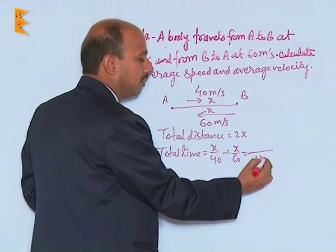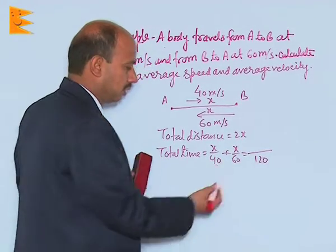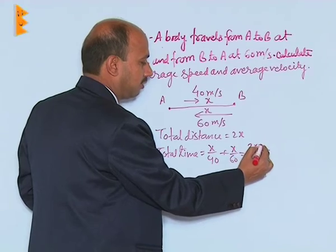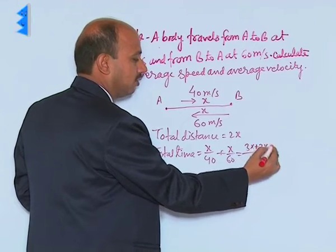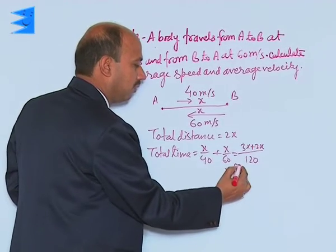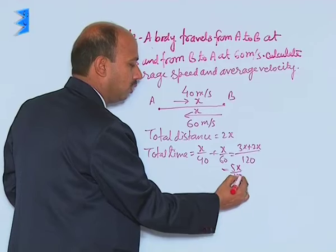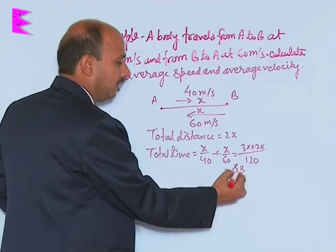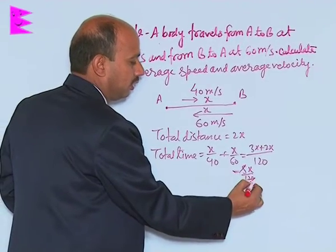Here if you take LCM, it will be coming 120. So that is 3x plus 2x, that means 5x by 120, and now you can write here 24.